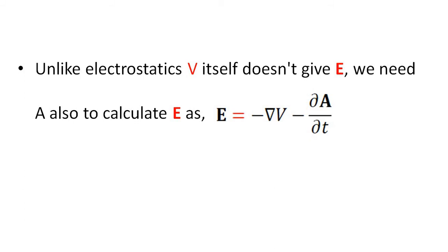We know the equation E equal to minus grad V minus dA by dt. In electrostatics, E equal to minus grad V. But in electrodynamics, E equal to minus grad V minus dA by dt. A needs to be determined, then only we can calculate E.